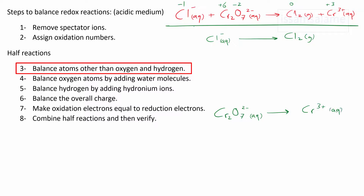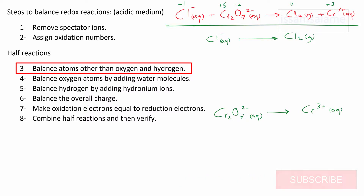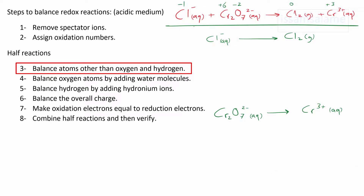And now let's go to the third step, which is how to balance atoms other than oxygen and hydrogen. If we look at the first half reaction, we can see that we have two atoms of chlorine to the right and one to the left, so we have to multiply the left side by two. In the second half reaction, we can see that we have two chromium atoms to the left and one chromium atom to the right, so we have to multiply the right side by two.